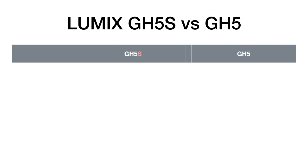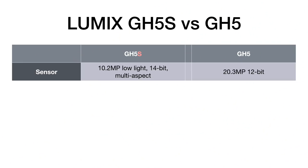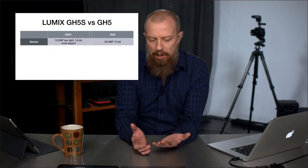GH5S versus the GH5. First off, the biggest difference is the sensor itself. The GH5S has a 10.2-megapixel low-light 14-bit multi-aspect sensor versus the GH5's 20.3-megapixel 12-bit sensor. What does that difference really mean? What are we talking about?